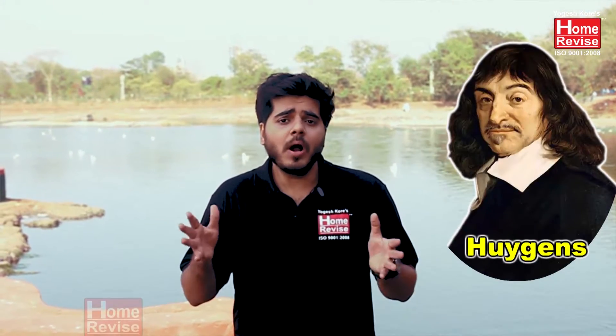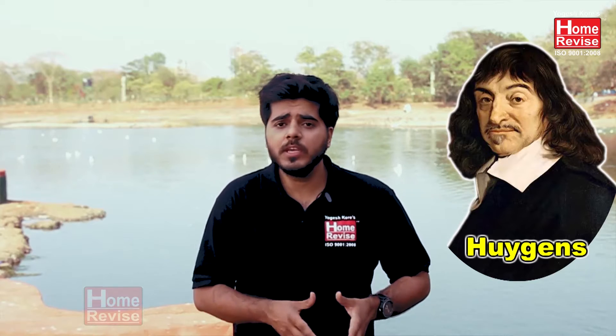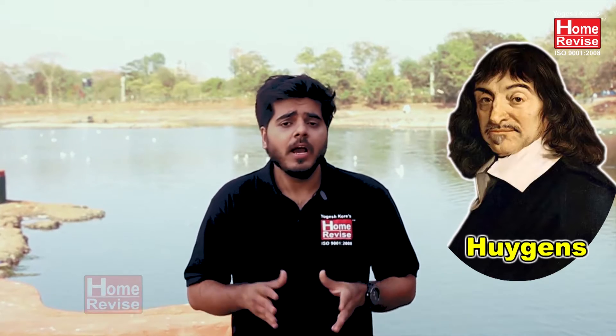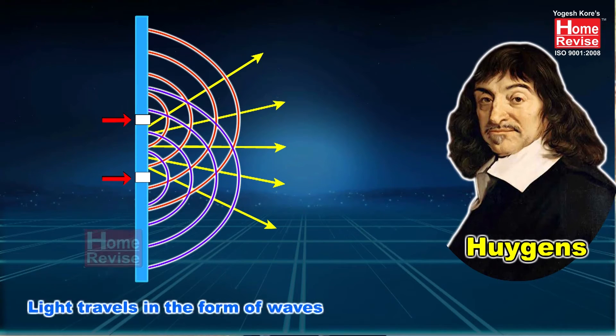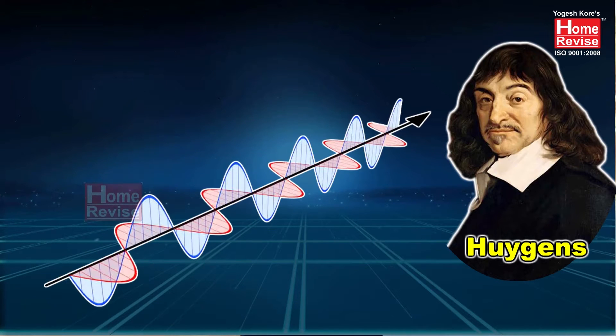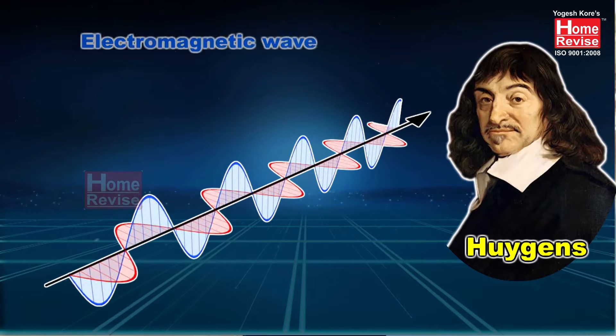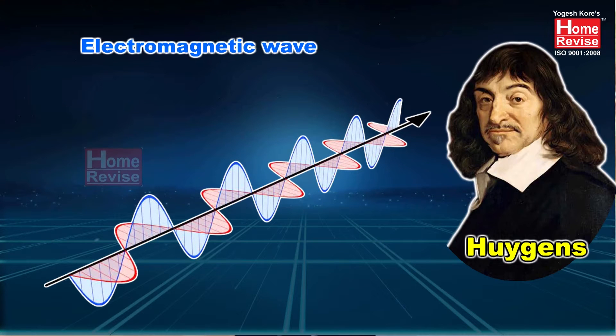But later on, a scientist again postulated a theory and his name was Huygens. According to Huygens' wave theory of light, Huygens said that light doesn't travel in the form of particles but light travels in the form of waves. And later on he said light travels in the form of electromagnetic waves.